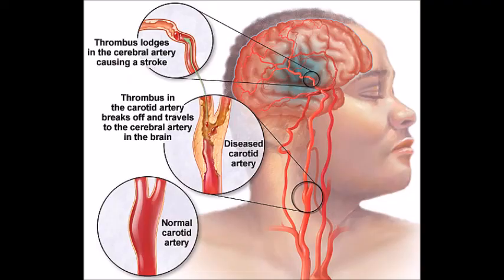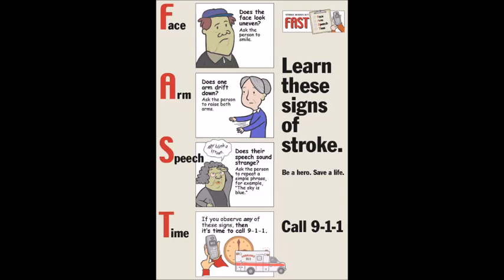Learn the signs and symptoms of a stroke. These include sudden weakness, paralysis of the body, confusion, trouble speaking or understanding speech, trouble seeing in one or both eyes, problems breathing, dizziness, trouble walking, loss of balance or coordination, unexpected falls, loss of consciousness, and sudden and severe headaches.